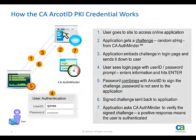Here's a brief description of how the CA Arcot ID PKI application flow works. In step one, the user tries to authenticate to a portal, VPN, or other asset, and is redirected to a login screen that asks for username and password. In steps two and three, behind the scenes, the authentication server, AuthMinder, creates and sends a random string challenge to the client.